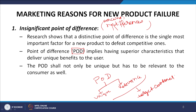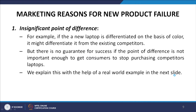If a new product has attributes relevant to customers but not unique, customers will continue to buy the old product. If the POD is only unique but not relevant to customers, they will not buy the new product. So for consumers to buy a product, the POD must be both unique and relevant to the target customers. For example, a new laptop differentiated only on color may not guarantee success if that difference is not important enough to stop consumers from purchasing competitors' laptops.